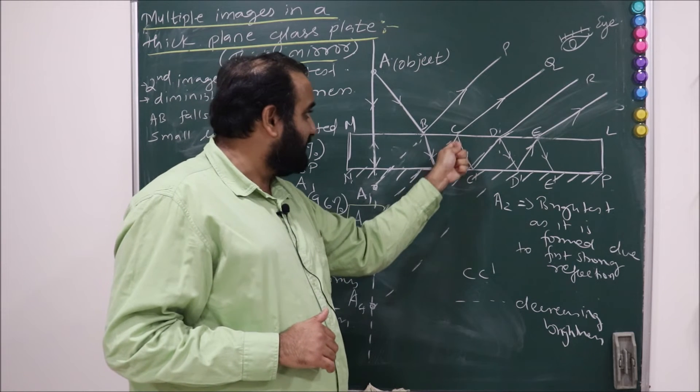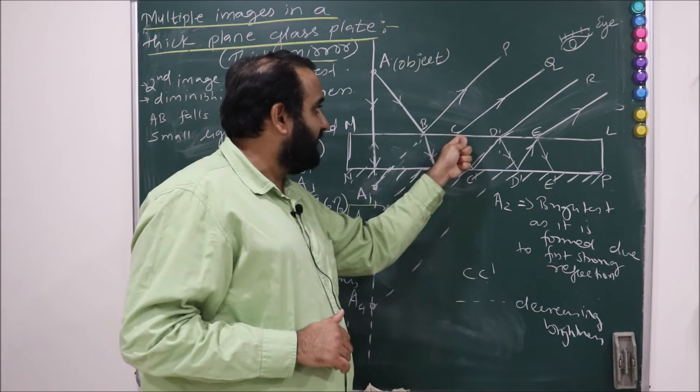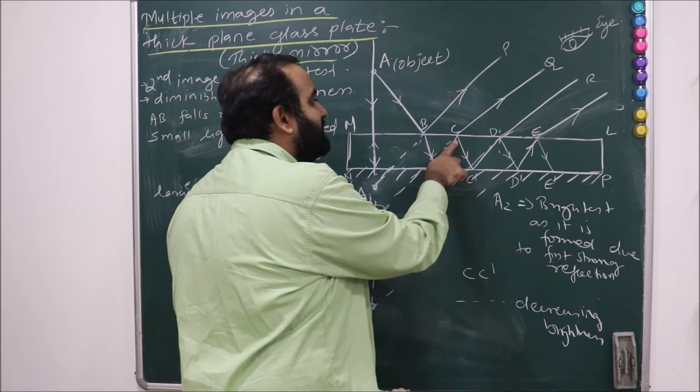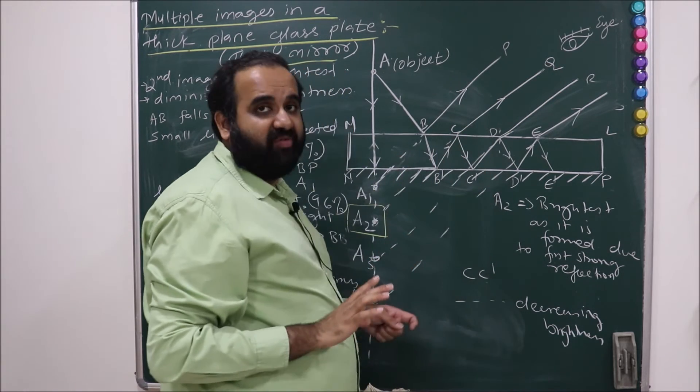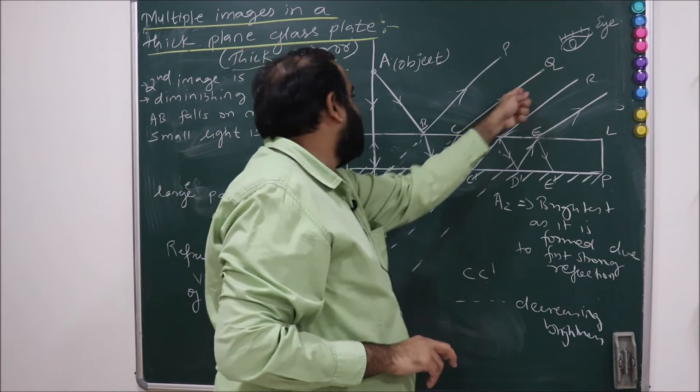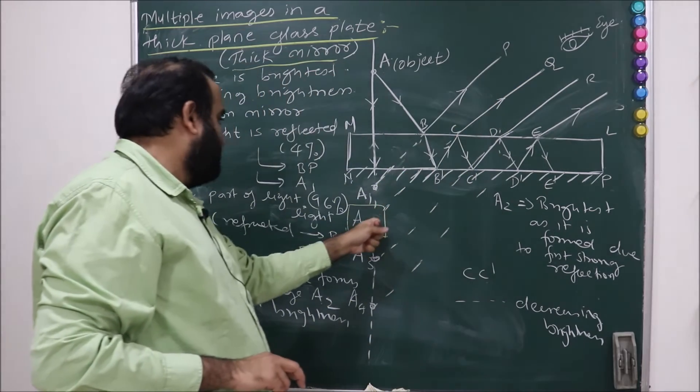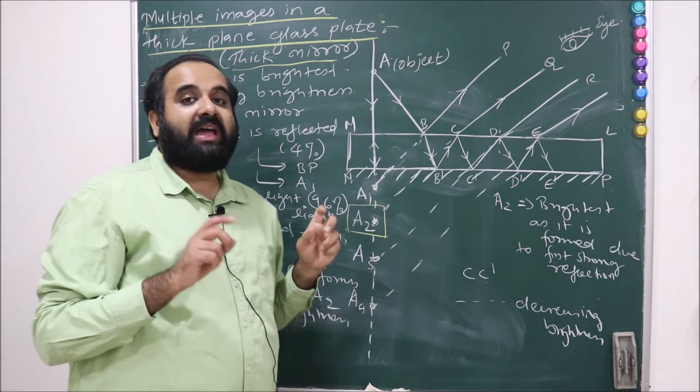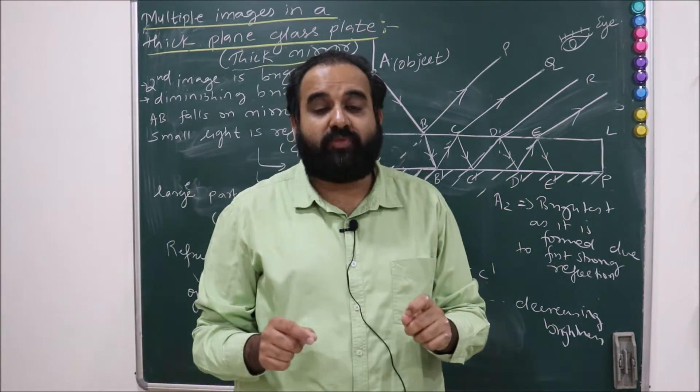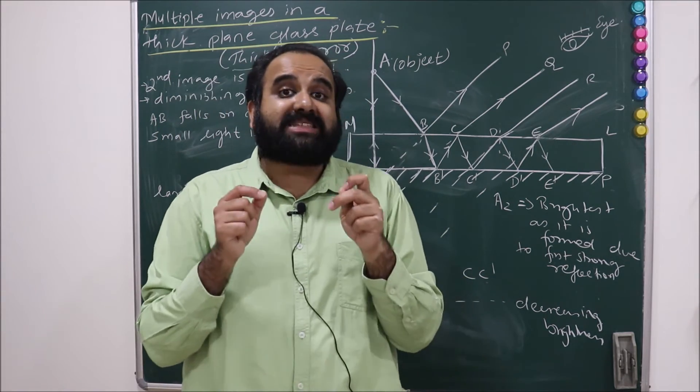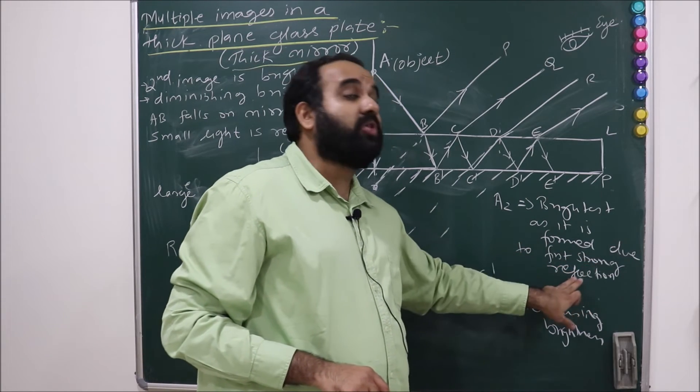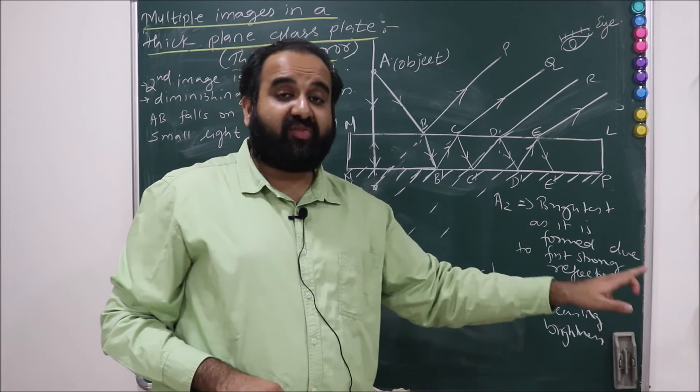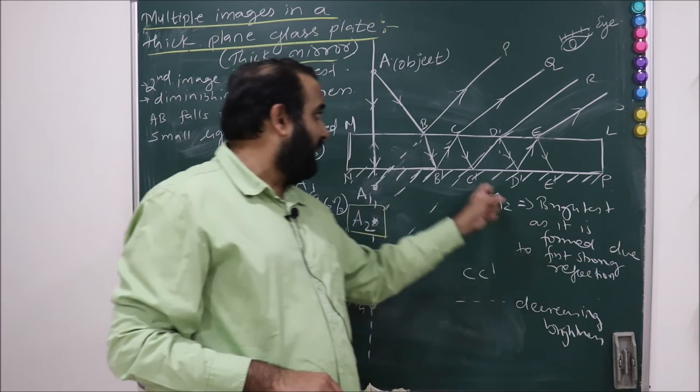Now again in this what will happen? Certain part of light will get refracted and certain part of light will get reflected. Now this reflected ray CQ, when we trace it back, the image formed is A2, which is going to be of maximum brightness because it is formed due to the first strong reflection.